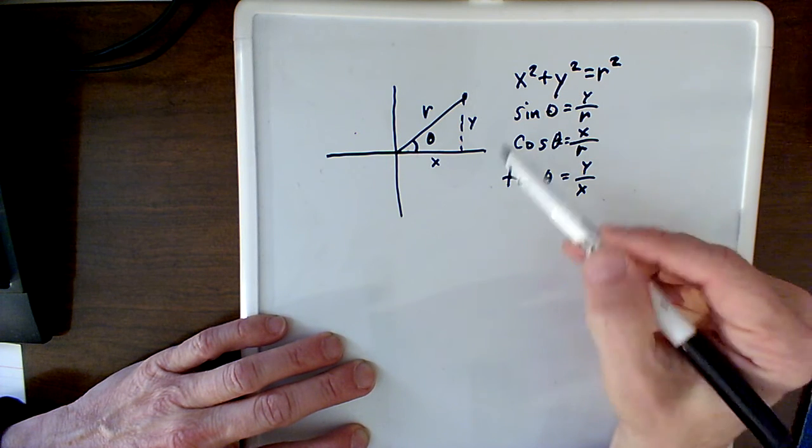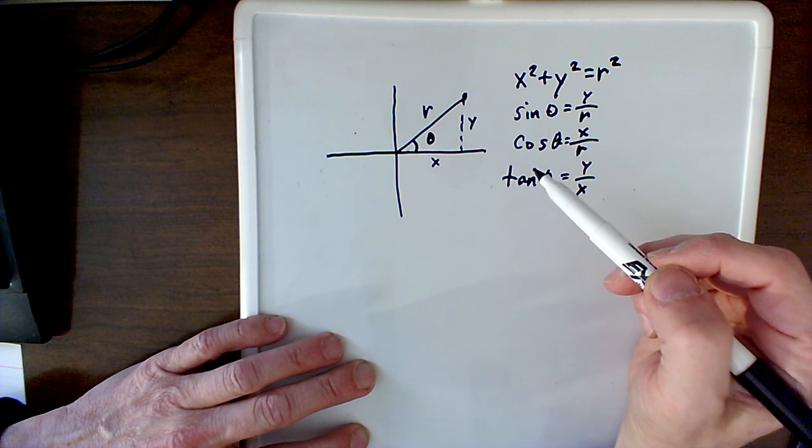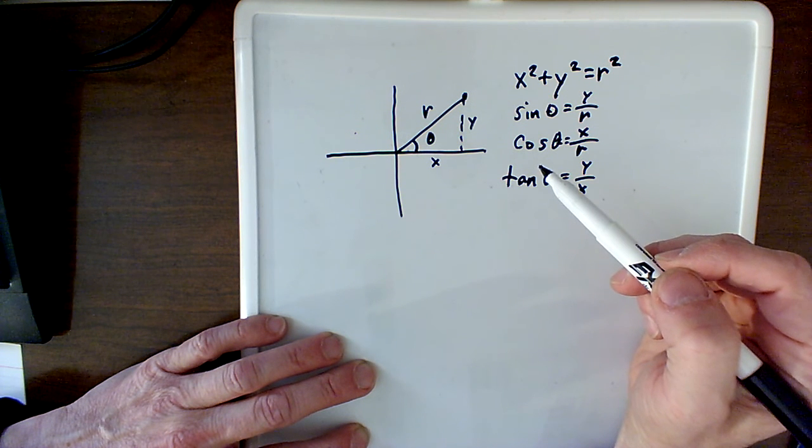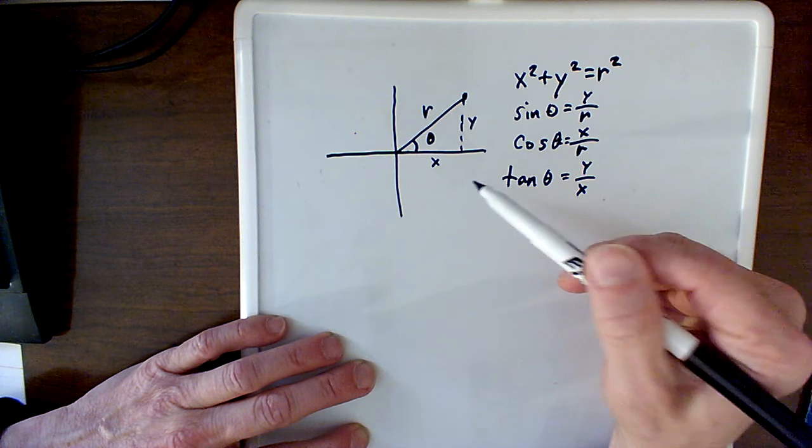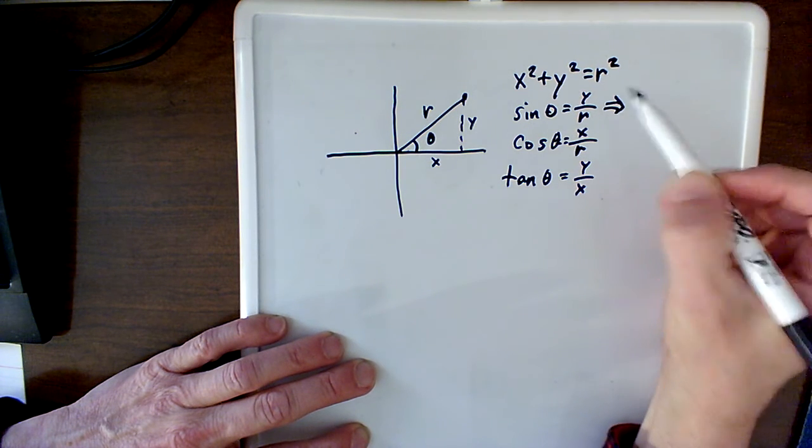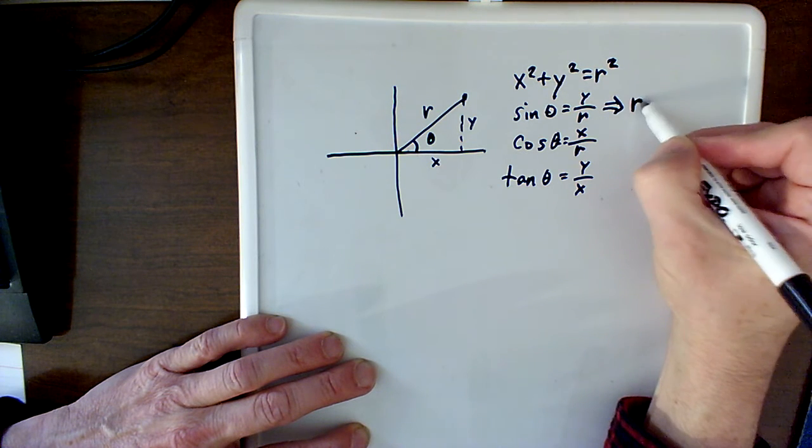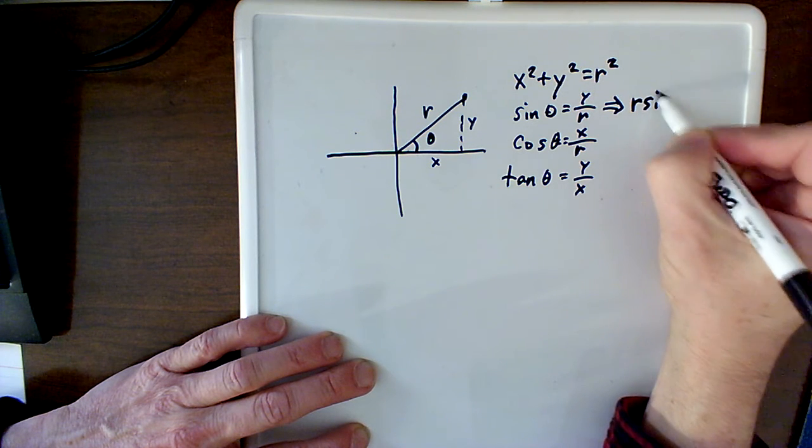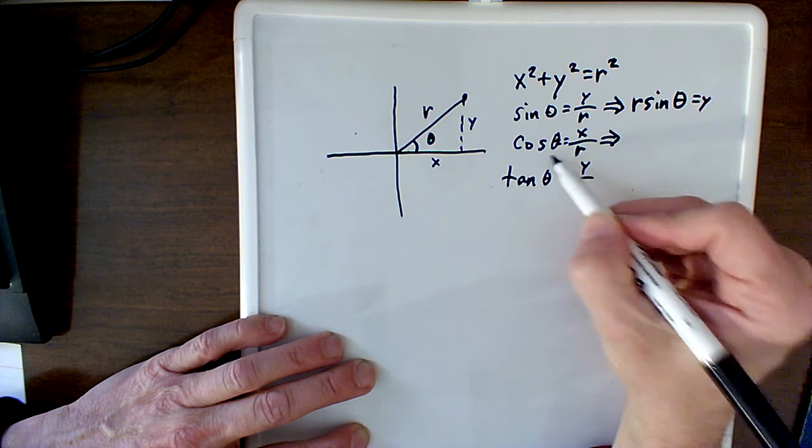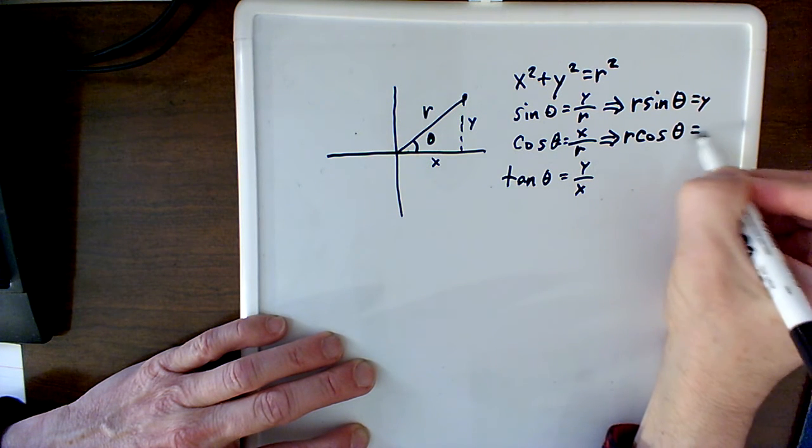So these are the things we're going to use when we're talking about graphing a polar equation. Polar equation is just another form of the linear equations or the rectangular coordinates that we've used in the past. So I'm going to do a little conversion here. If I multiply both sides of this by r, I'm going to get r sine theta equals y, and then if I do the same thing here, multiply by r, I get r cosine theta equals x.